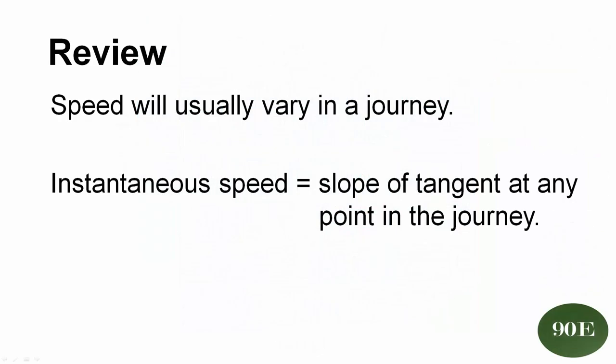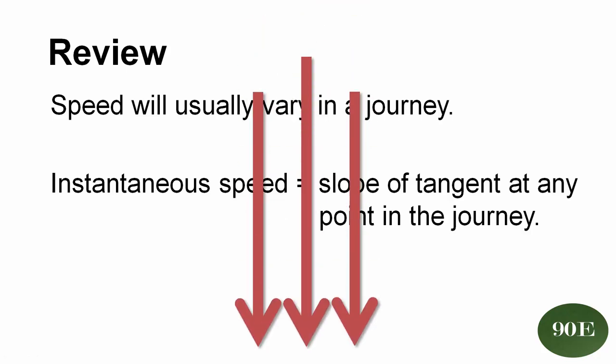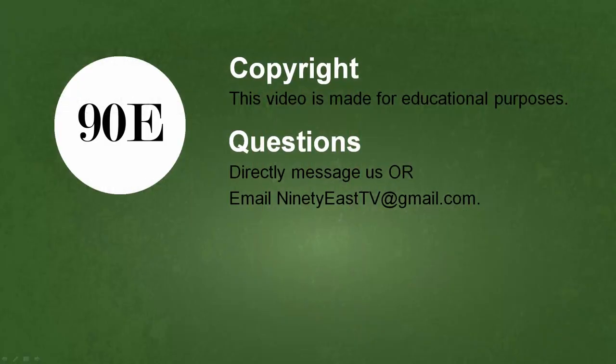For now you just need to remember that speed will usually if not always vary during a journey, but we can calculate the instantaneous speed by looking at the slope or gradient of a tangent at any one point in time in the journey. As always there's a worksheet linked in the description box below, have a look and if you've got any questions feel free to directly message us through YouTube or send us an email to 90 east tv at gmail.com. Thanks everyone!